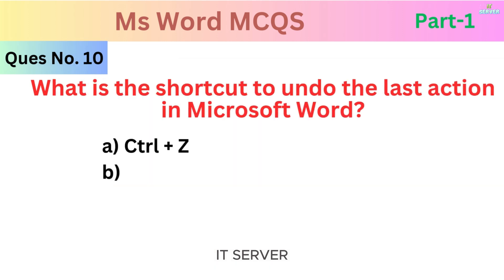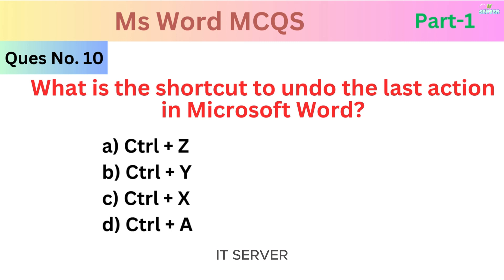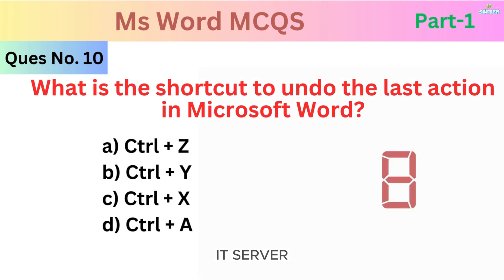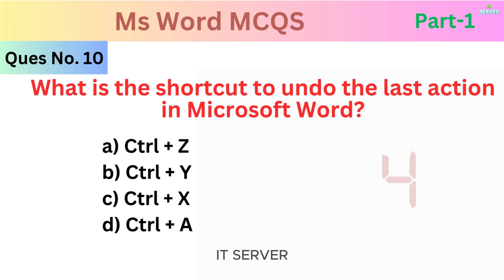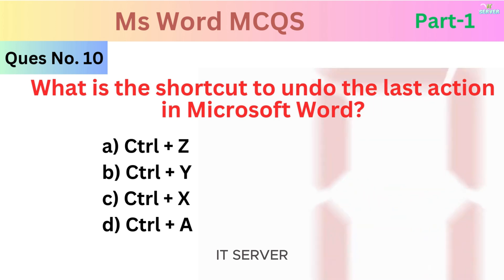What is the shortcut to undo the last action in Microsoft Word? The answer is Control plus C.